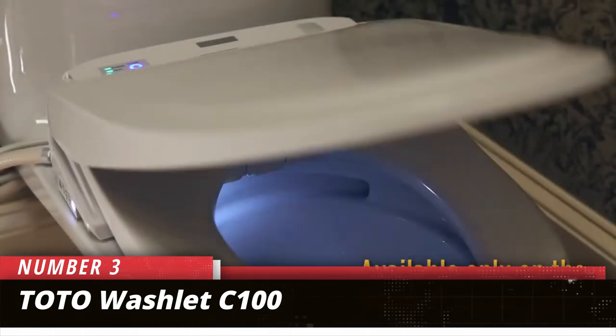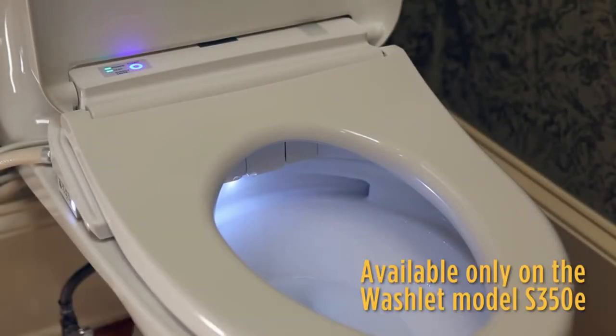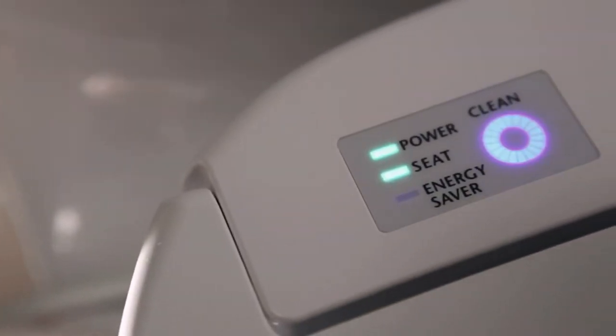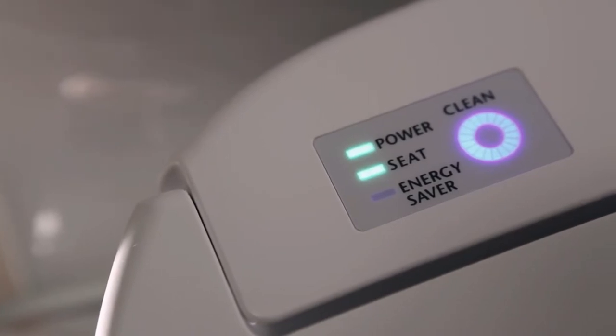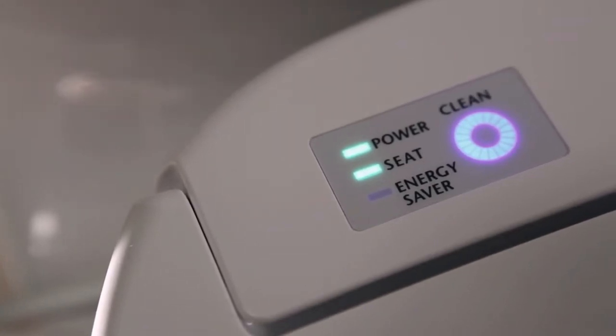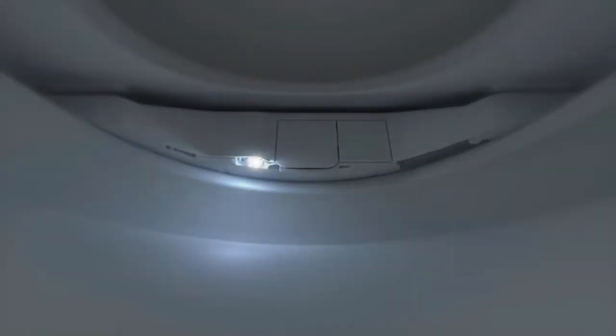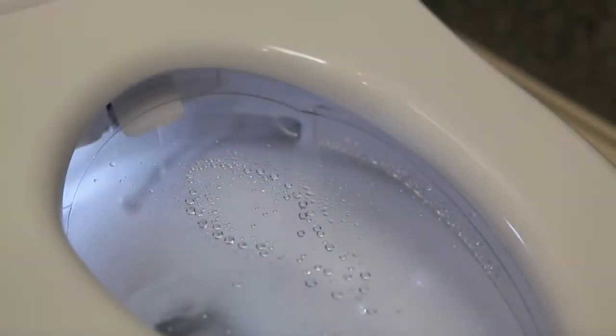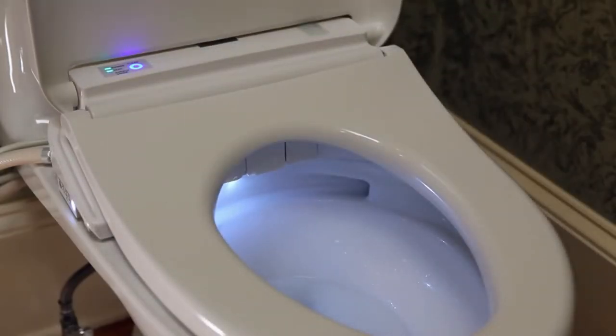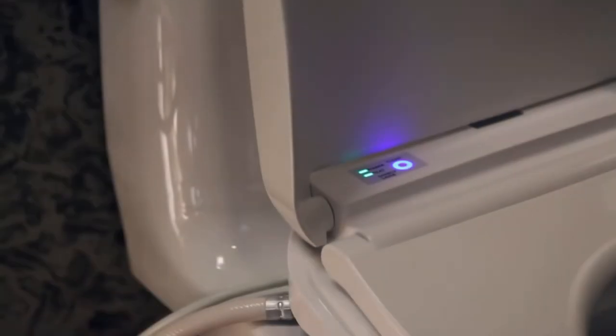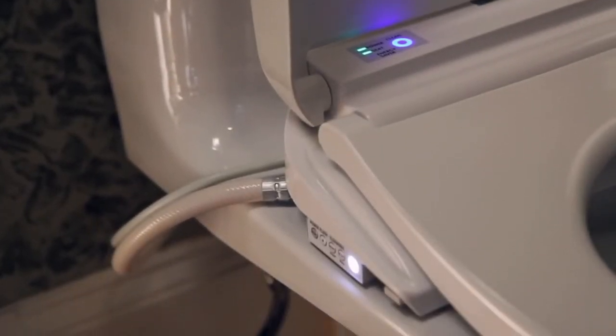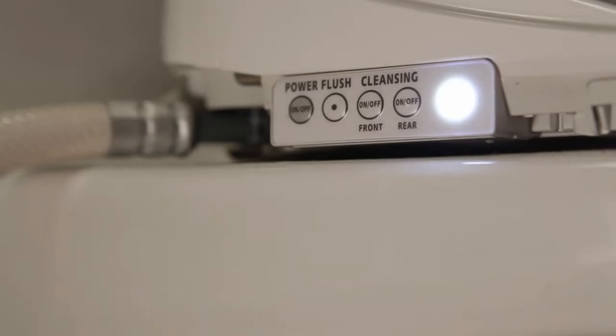Number 3. Toto Washlet C100. Dryers on bidet seats pose a particular problem, you want them to be strong enough to get the job done, but not so strong the airflow actually splashes the toilet water. The Toto C100 has three speeds that all land in the sweet spot of being effective without being too aggressive. In addition, the seat has three warming temperatures, and the tank style preheats enough water for up to a 45-second cleaning.